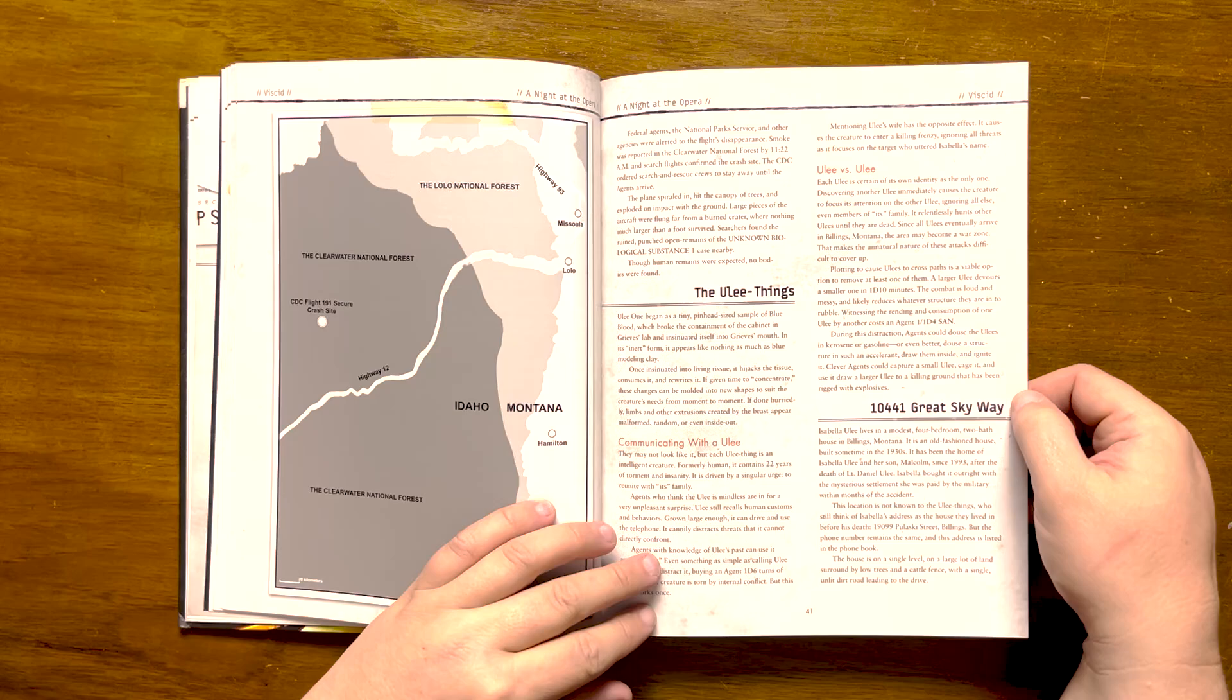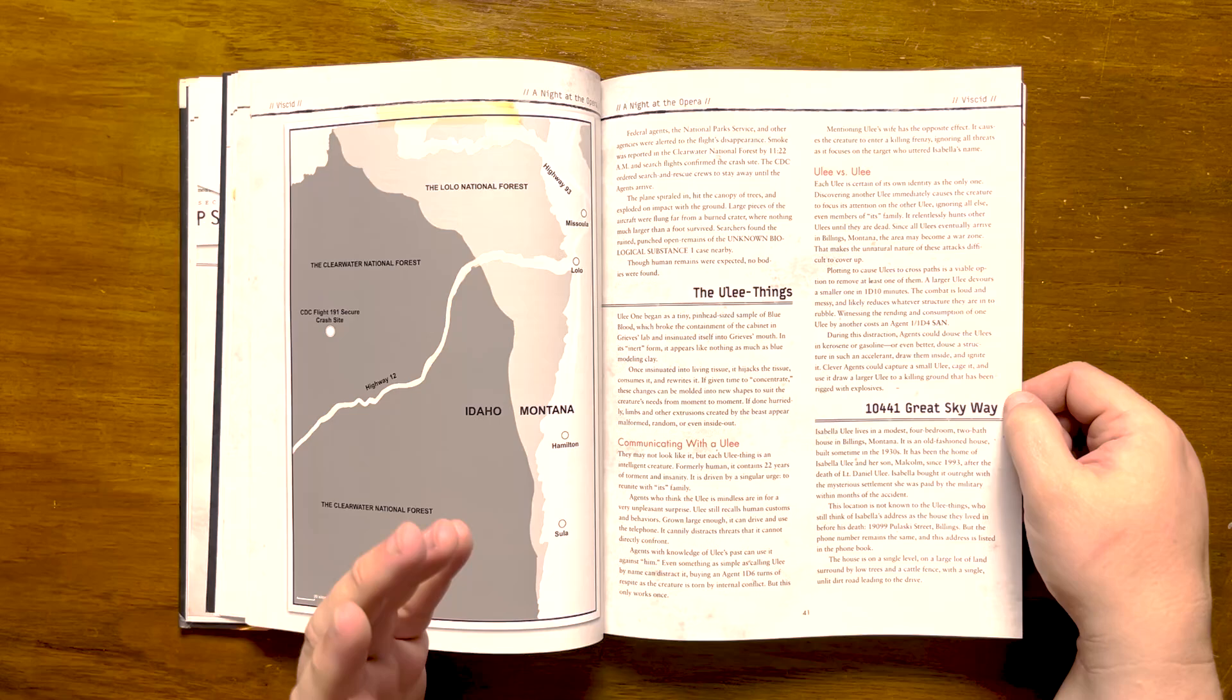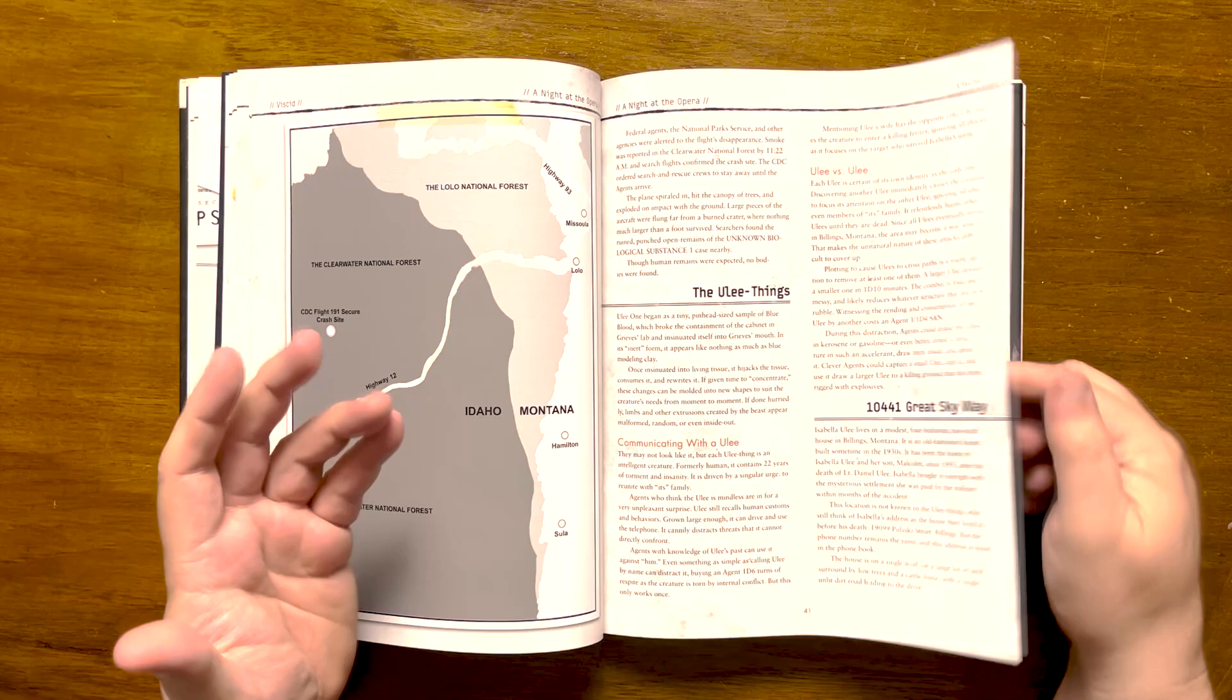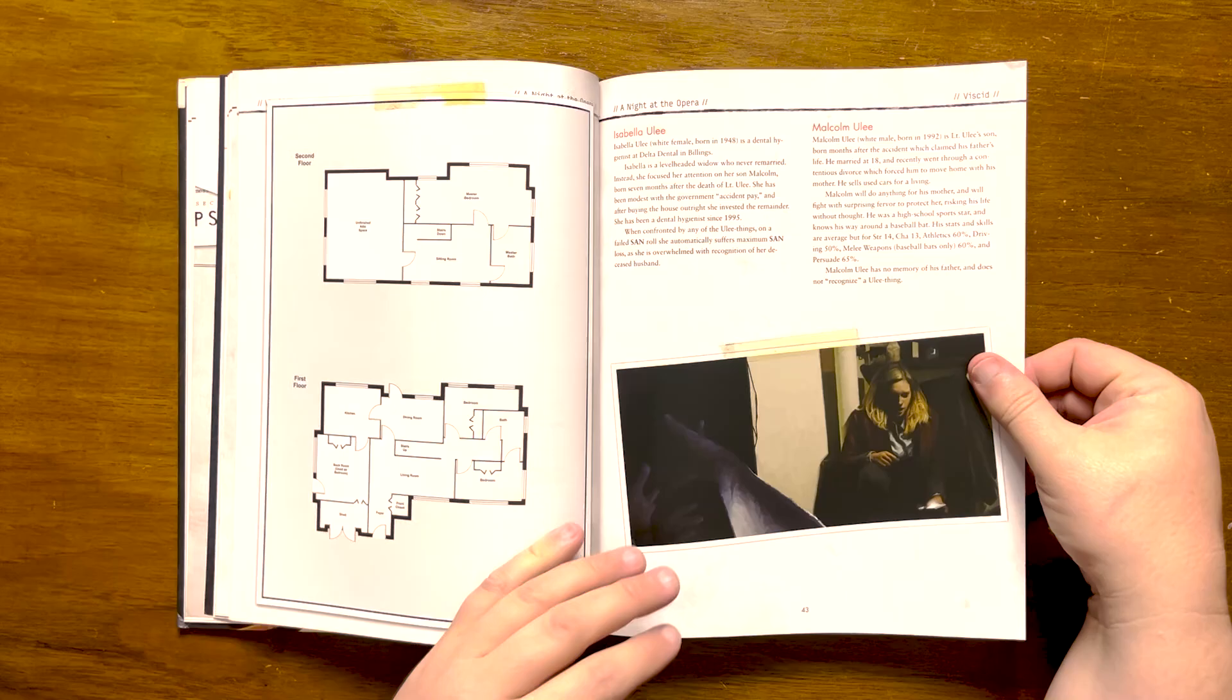It then details 10441 Great Skyway. The Uli things believe that their wife Isabella still lives at 1909 Pulaski Street, Billings, but the phone number is the same. It gives us a map of the house and gives us a small bit of information on Isabella Uli and their son, Malcolm Uli.